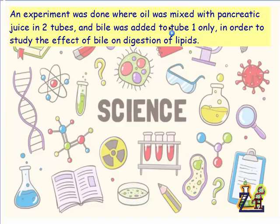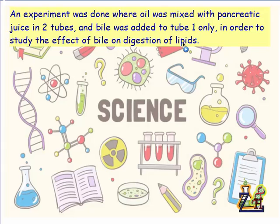We can notice that the manipulated factor is the bile, because we put bile in one tube and did not put bile in the other one. The objective of the experiment is to study the effect of bile on digestion of lipids, so the measured factor — the result — is the digestion of lipids.